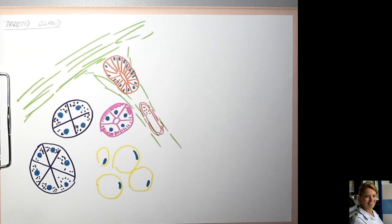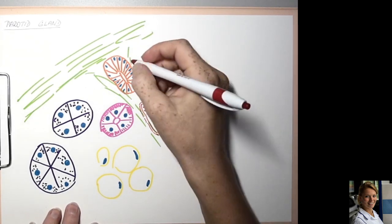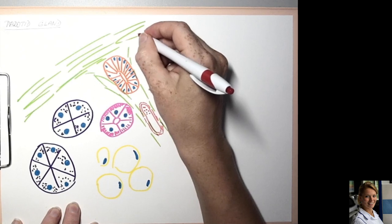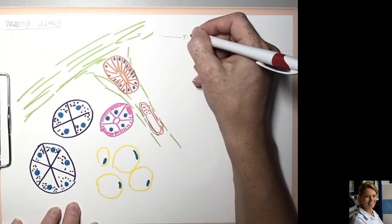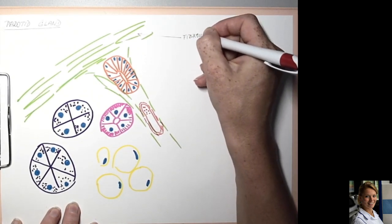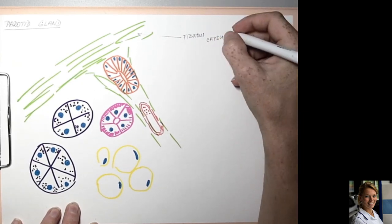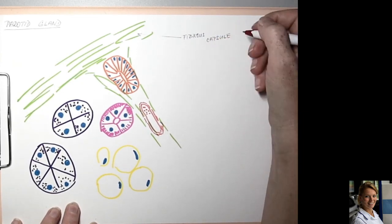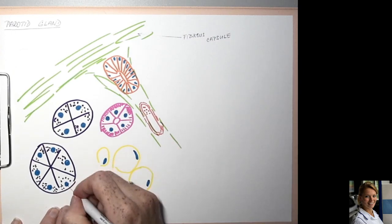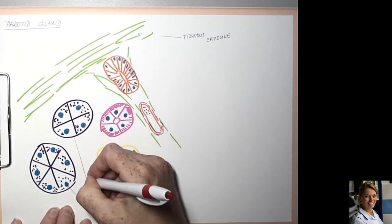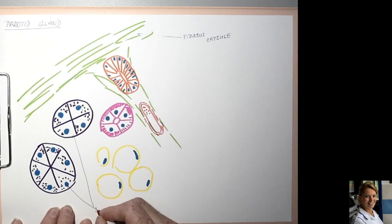So that's all, now we will describe the scheme. Here is the fibrous capsule, and here are serous acini with basophilic cells.